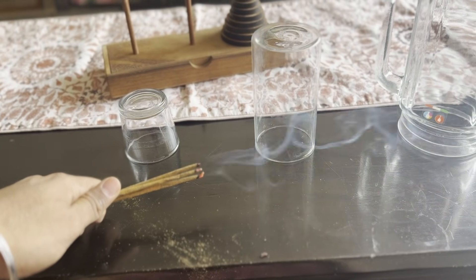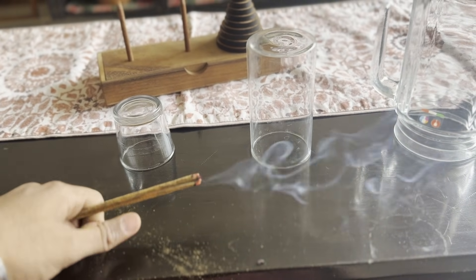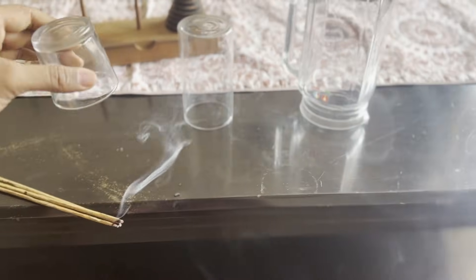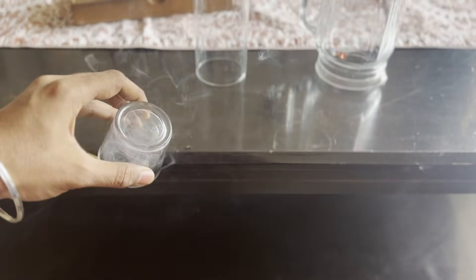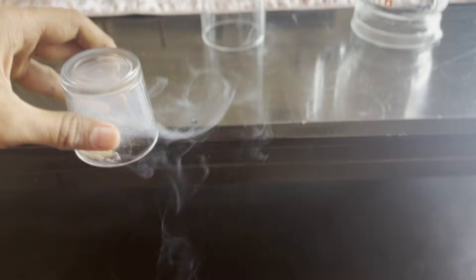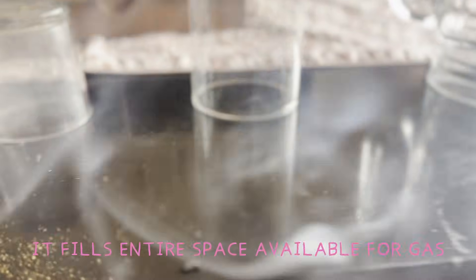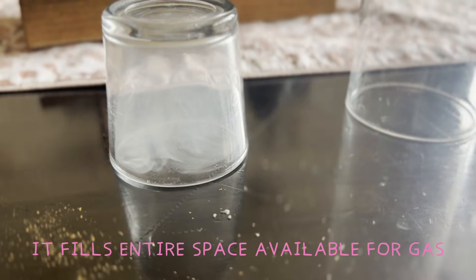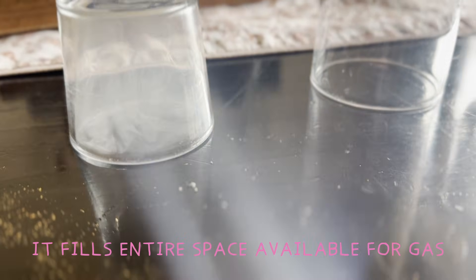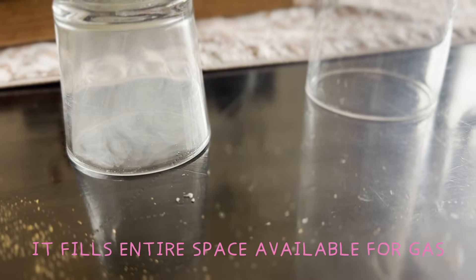See how the smoke spreads through the room. It's moving into whatever space is available. Now let's take this small glass and place it on top of the incense stick. Look at that. The smoke is now trapped inside. It fills the entire space in the glass. It's not settling at the bottom. It's not staying in one place. It just spreads out evenly.